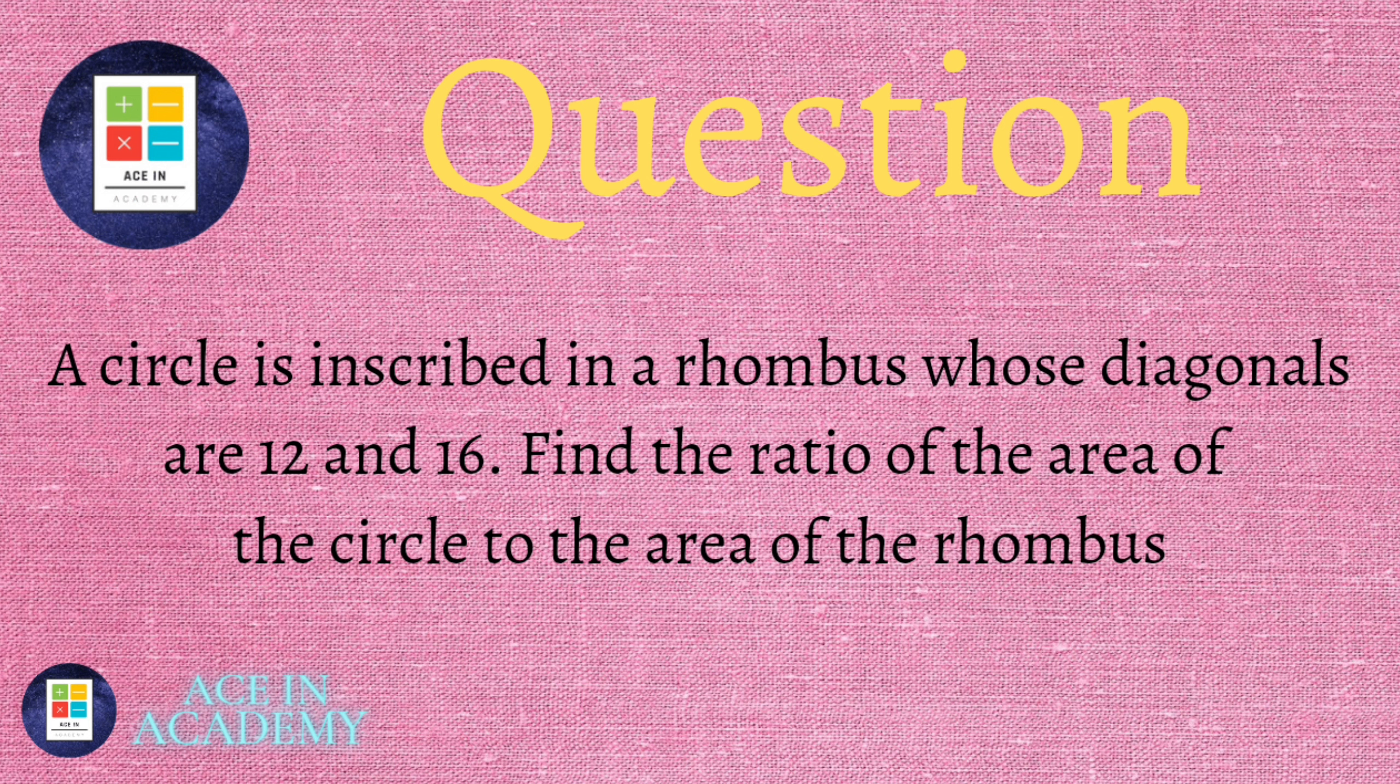A circle is inscribed in a rhombus whose diagonals are 12 and 16. Find the ratio of the area of the circle to the area of the rhombus.